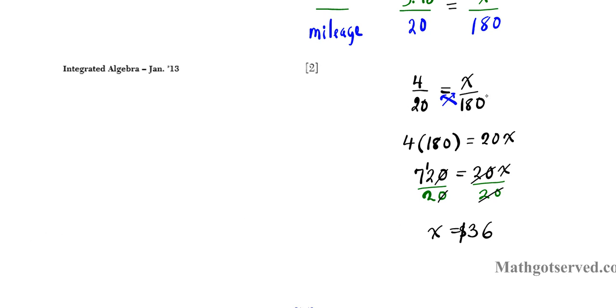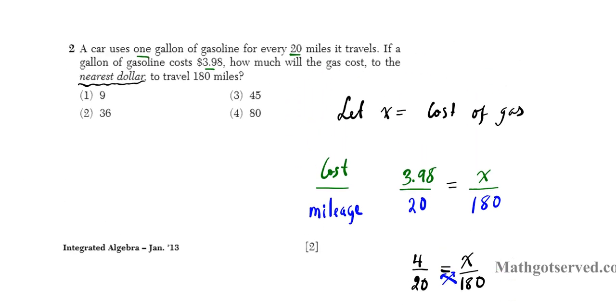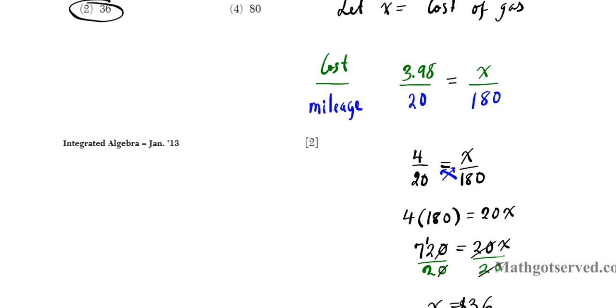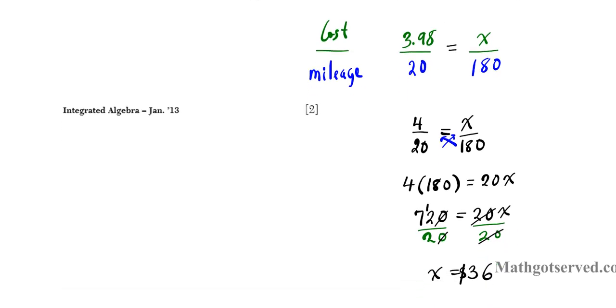Another way you could solve this equation was just multiply both sides by 180 to get x by itself. That's another way you could do it. So basically, if you want to cover 180 miles, it's going to cost you $36 to the nearest dollar. That goes as an example of how to use proportions to solve problems involving two related quantities.